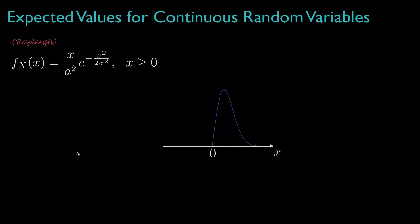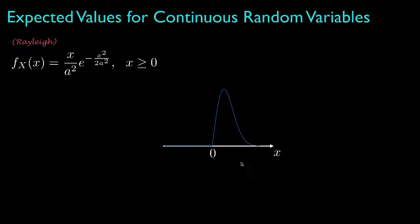Let's start with the probability density for a Rayleigh random variable, which is an important density used to model signal values in radar and communications. The range for this random variable is the non-negative numbers, and its shape is parameterized by a variable A.